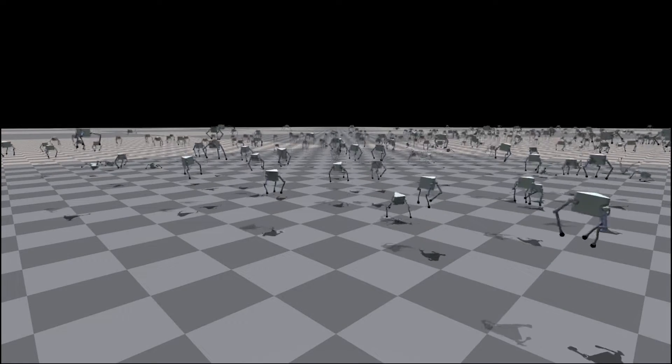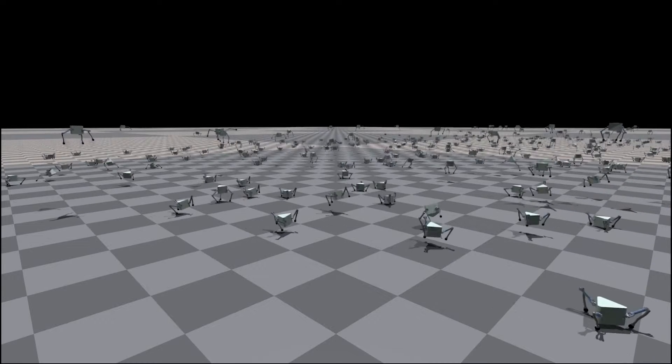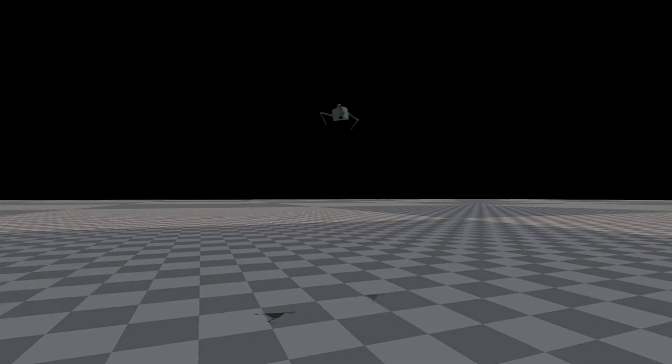These highly complex and dynamic motions were trained with deep reinforcement learning in simulation. The trained policies running on the robot enable complex locomotion such as dynamical landing and jump-off.